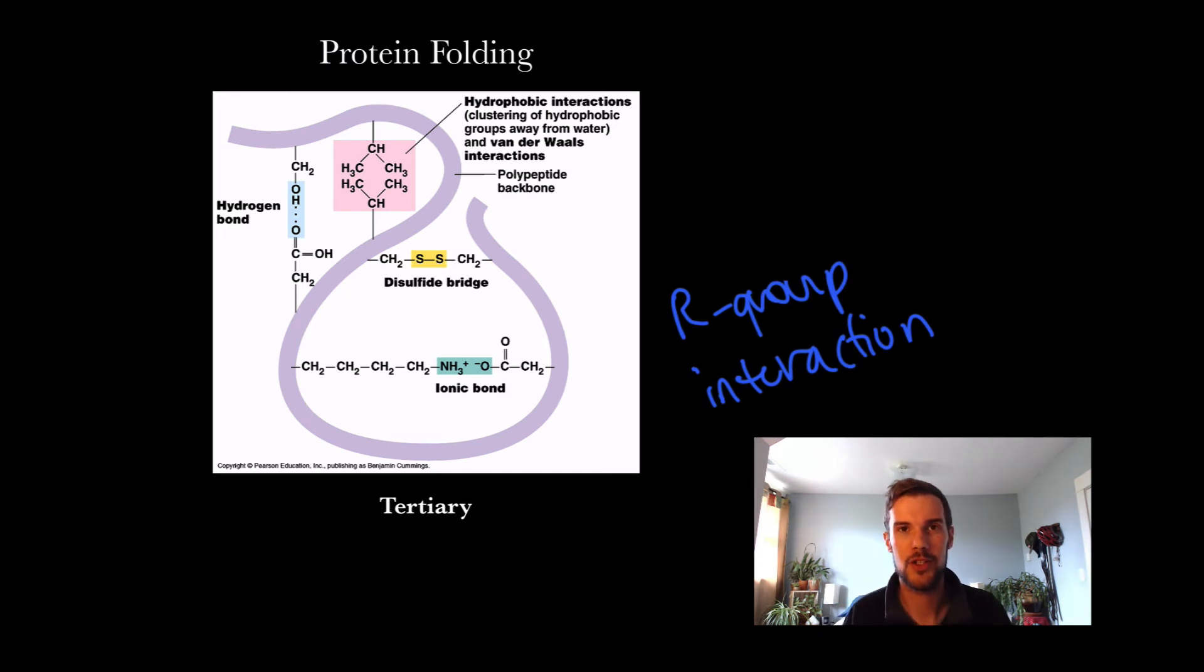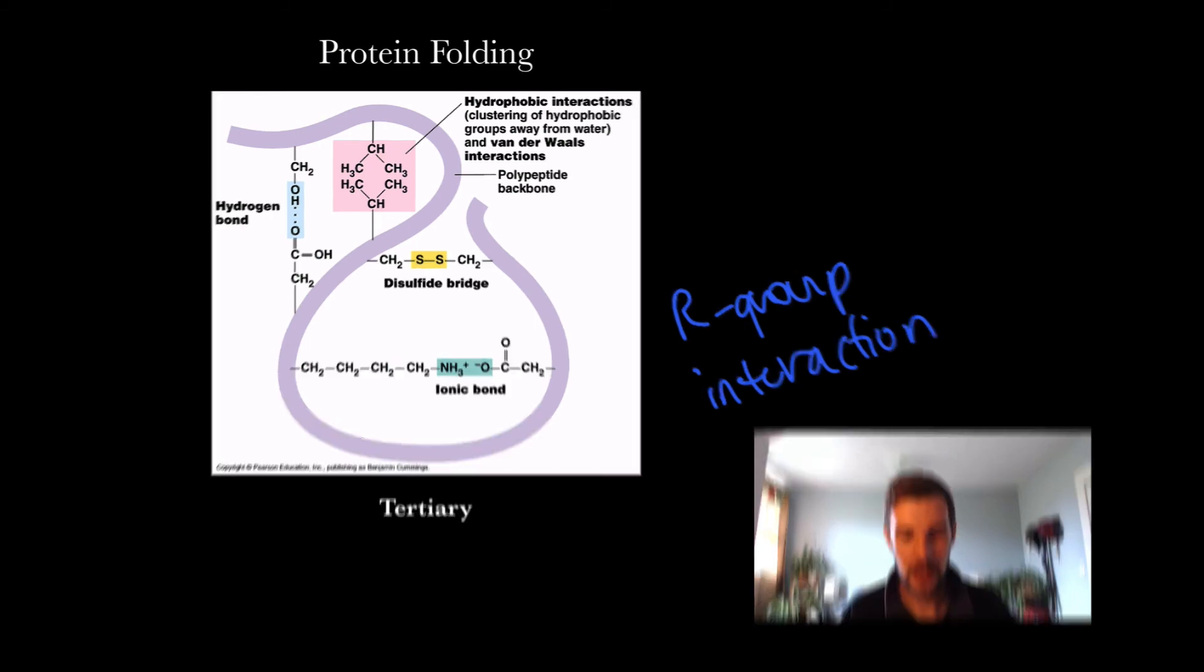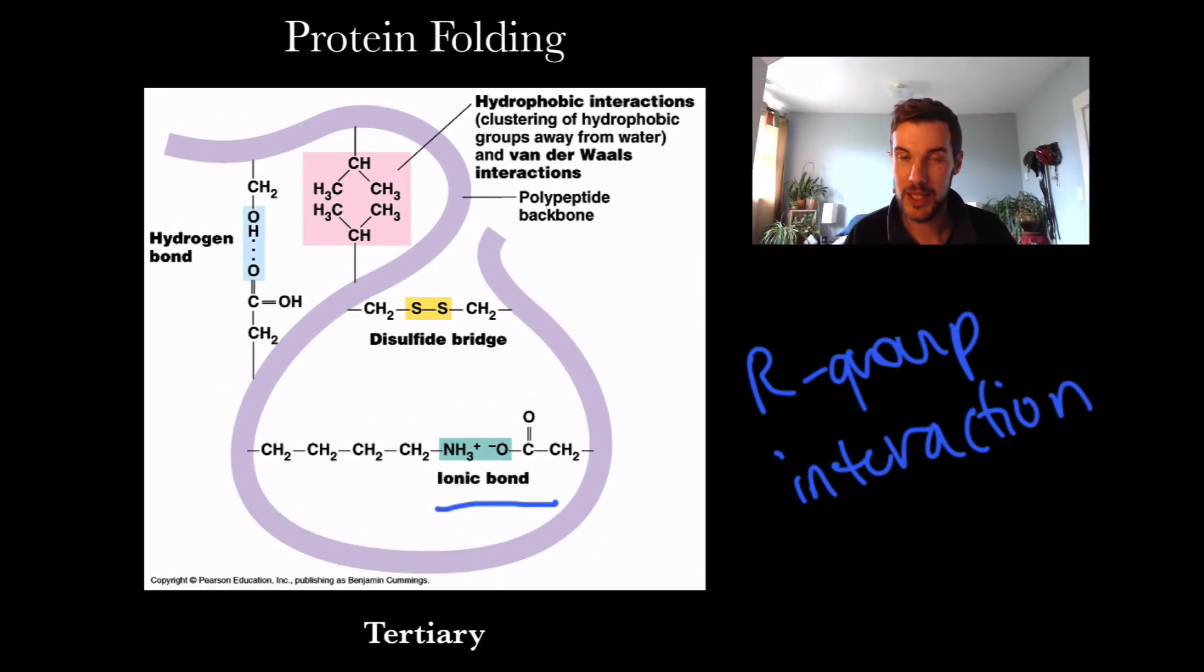We can have ionic bonding between this oxygen and amino group. We could have disulfide bridge between R groups that contain sulfur in them, and disulfide bridge bonds are actually in your hair.